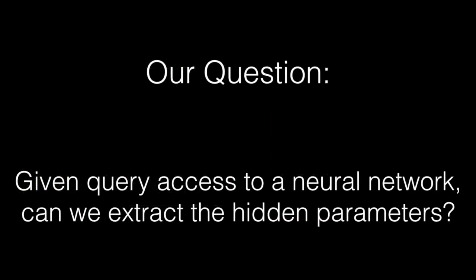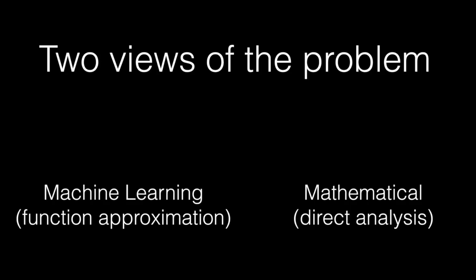We're going to try and answer this: given query access to a neural network, can we extract these parameters from the model? There are two ways to view this problem. The first is what most prior work has done — studying this as a machine learning problem. Neural networks are types of functions, and machine learning is good at function approximation. So we treat the neural network as a supervisor, collect a new dataset, train a new model, and use this to solve the problem. What we're going to do instead is solve this as a direct mathematical problem — treat the neural network as a sequence of functions we can analyze directly and actually recover the weights. This lets us recover nearly identical models, instead of just a similar model that solves a similar task reasonably well.